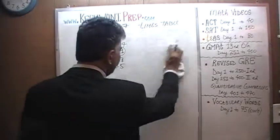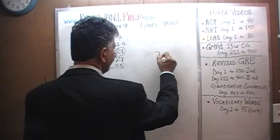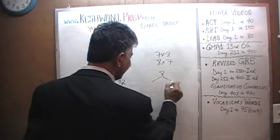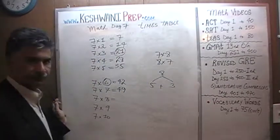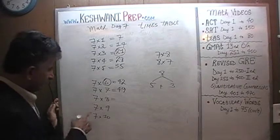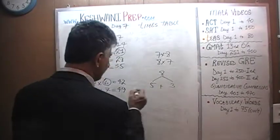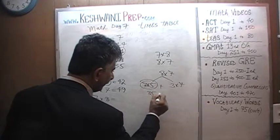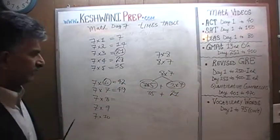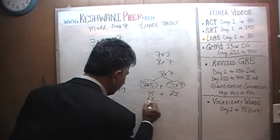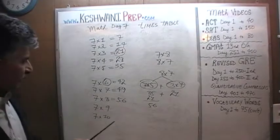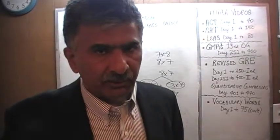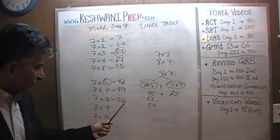How about 7 eights? We know 8 sevens is the exact same thing. 8 can be written as 5 plus 3. We have 7 eights, or 8 sevens — same thing. So we need 7 fives which are 35, and 3 sevens which are 21. 35 plus 21: you get 56. Which makes perfect sense because 7 sevens was 49, and adding 7 to 49 — 49 plus 1 is 50, and 6 more takes us to 56.